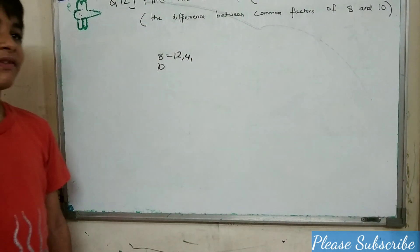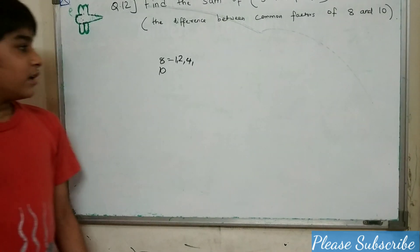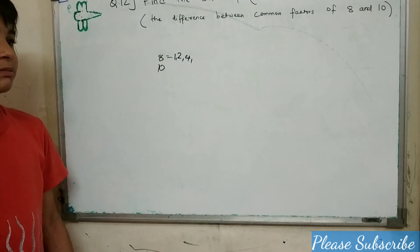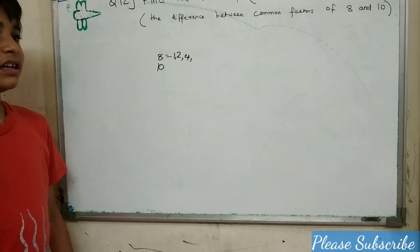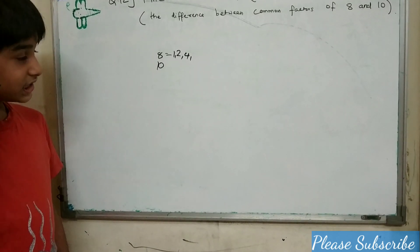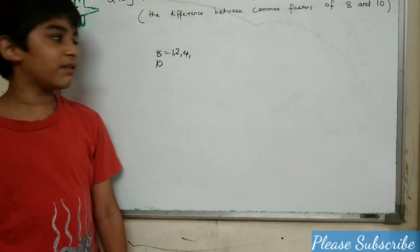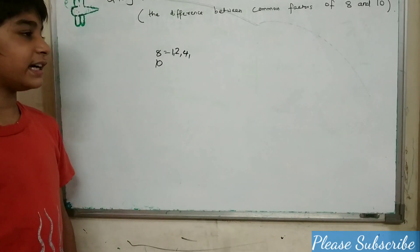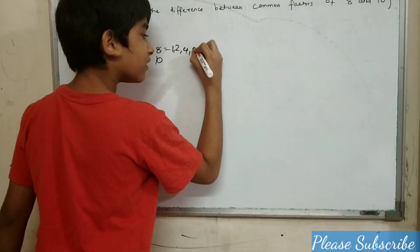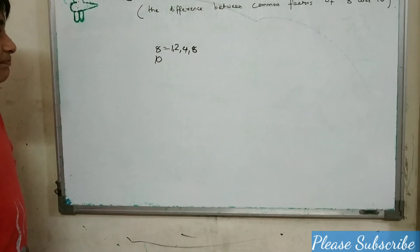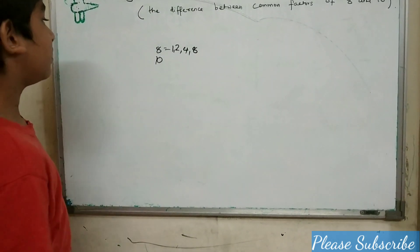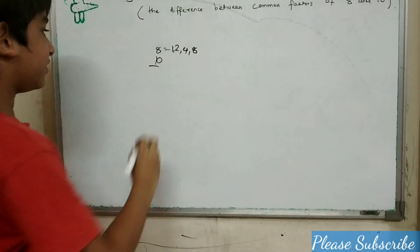5 is not a factor of 8. 6 is not a factor of 8. 7 is not a factor of 8. 8 is a factor of 8 because 8 equals 8. Now we will find the factors of 10.